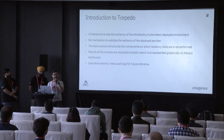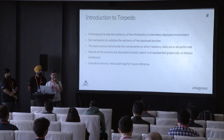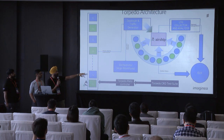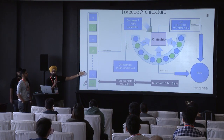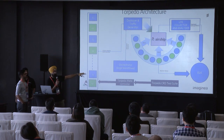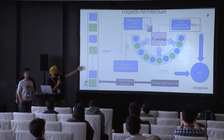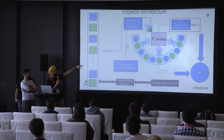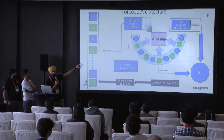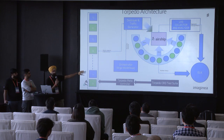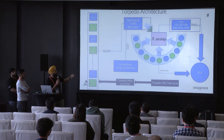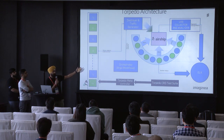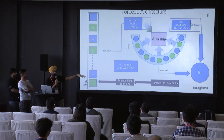The data sources provide the components on which resiliency tests are performed. Imagine a typical action movie scene: we have an orchestrator whose duty is to send chaos jobs to attack a target. Meanwhile, we have a destroyer and traffic generator — chaos jobs randomly kill pods of a particular service, and the traffic generator hits those services to detect latency or performance issues.